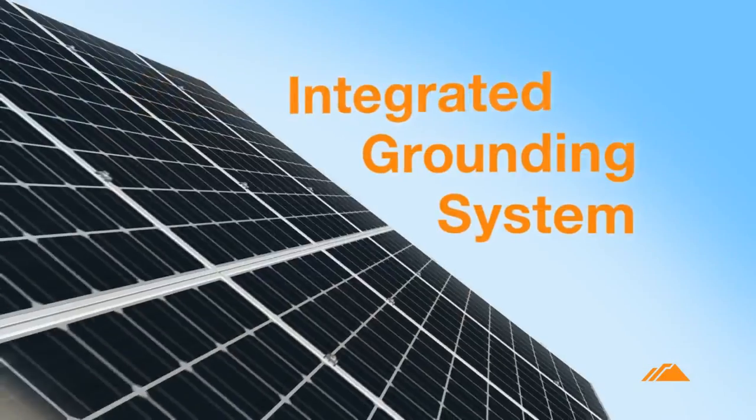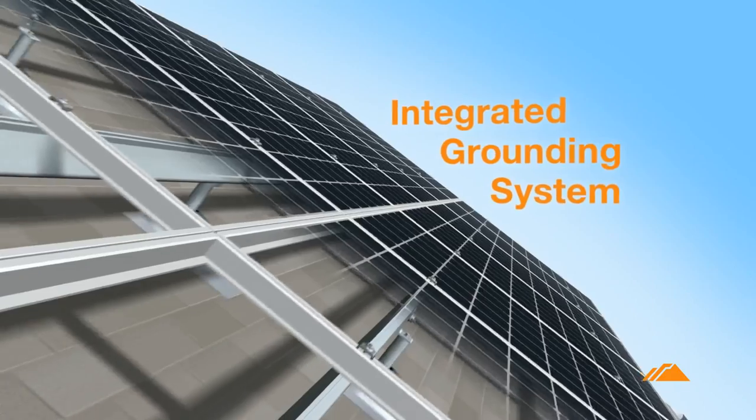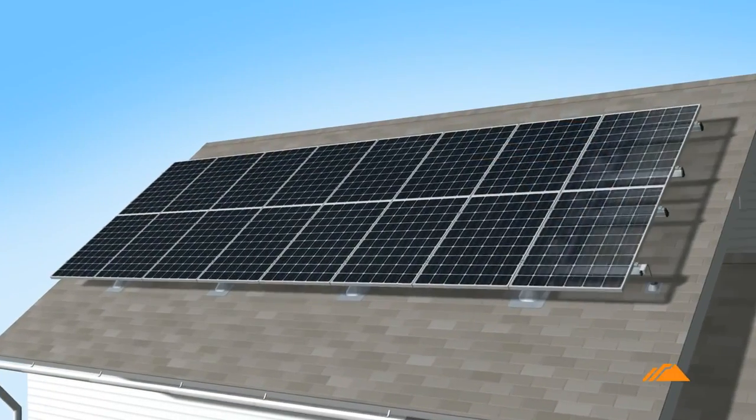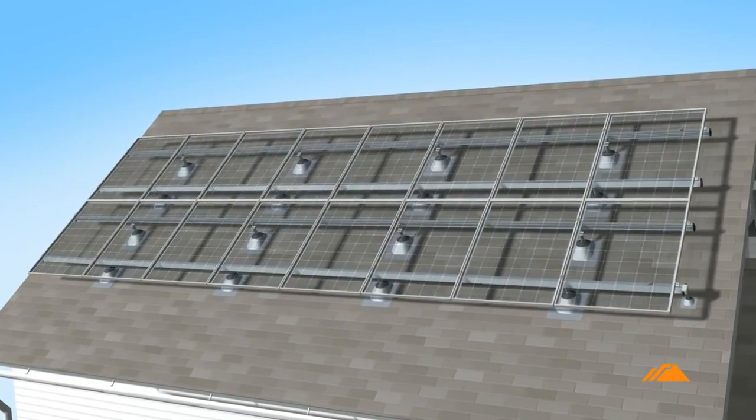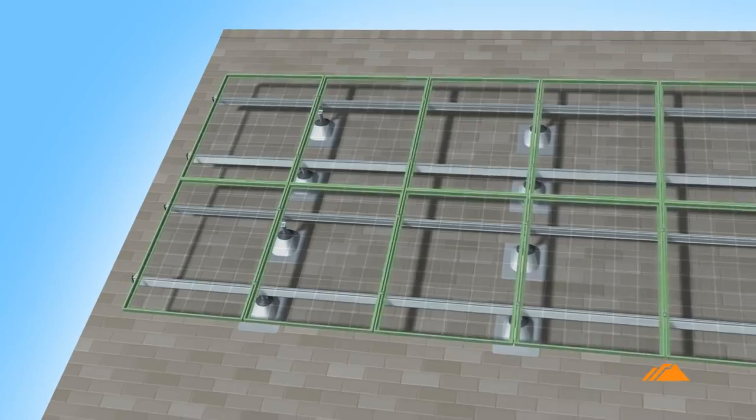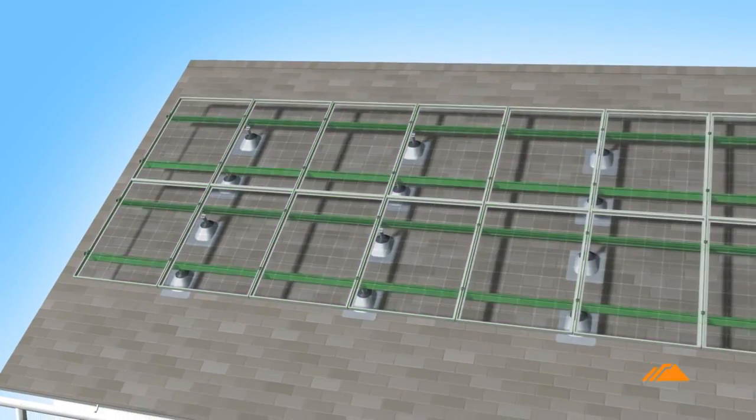Introducing the Iron Ridge Integrated Grounding System. Certified to UL2703, the integrated grounding system bonds solar modules directly to Iron Ridge rails.